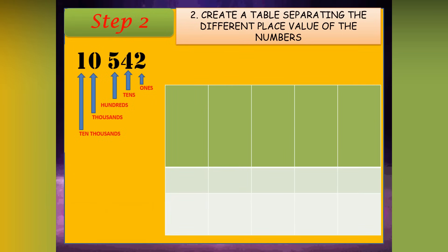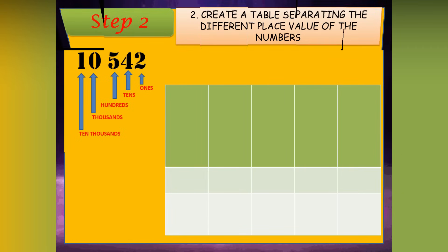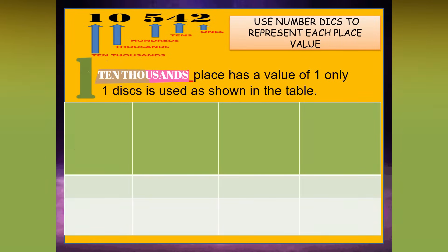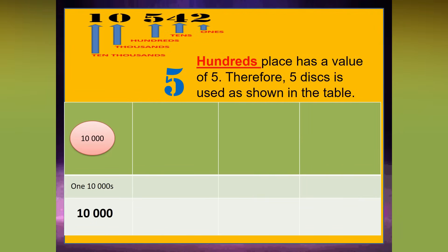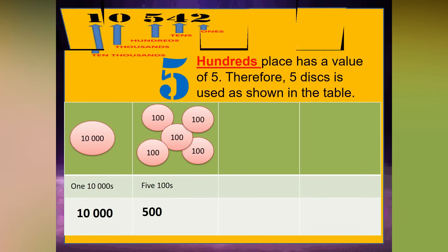Step 2: Create a table separating the different place values of the numbers. Remember, the number in each place value will determine the number of discs you will use. Let's now draw number discs. The 10,000s place has a value of 1. Therefore, 1 disc is used as shown in the table. The 100s place has a value of 5. Therefore, 5 discs are shown in the table.